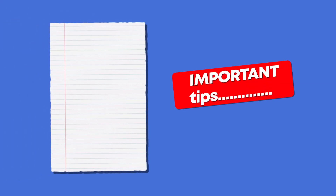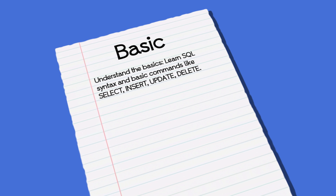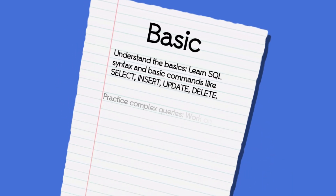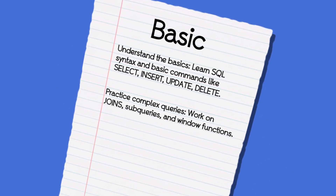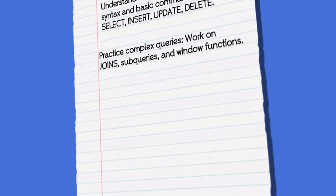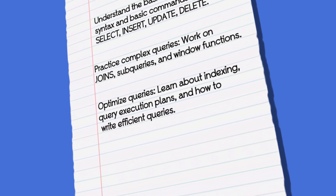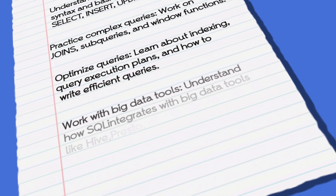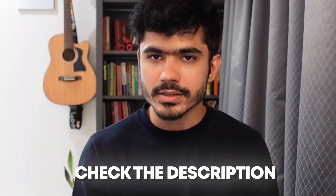Understanding how to write efficient SQL queries is important for your career. Start with the basics — how to retrieve, insert, update, and delete records. After that, learn how to write complex queries such as joins, subqueries, and window functions. These are very important for your data engineering career. You can also learn how to optimize queries through indexing, writing efficient queries, and understanding the query execution plan. You can also learn about data warehouses such as BigQuery, Redshift, and Snowflake. If you are interested in learning SQL for data engineering and data warehouses, I have a course on this — check the description for more details.